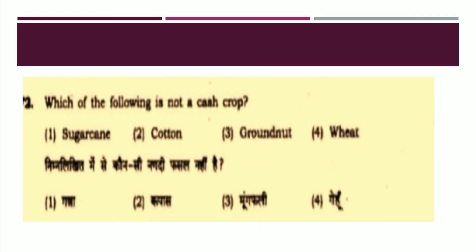The next question: Which of the following is not a cash crop? The options are: Sugar cane, Cotton, Ground nut, or Wheat. The right answer is Option number four: Wheat.